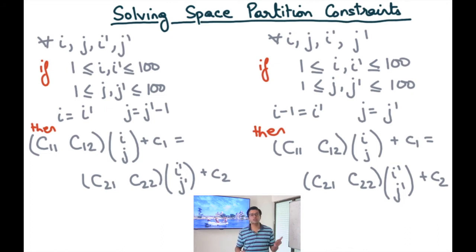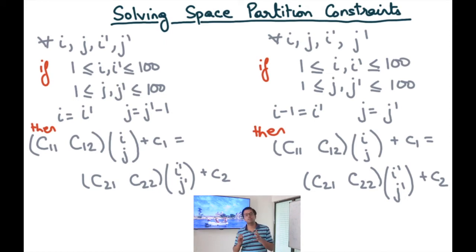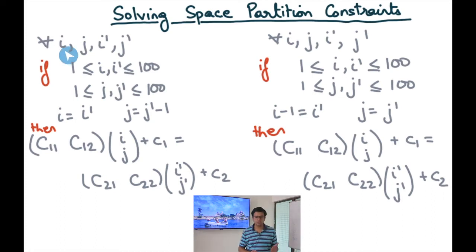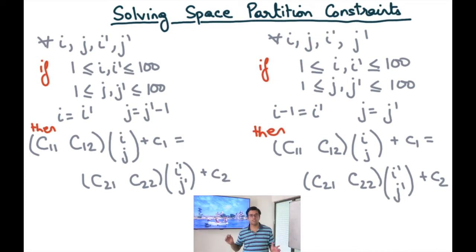Now we are going to discuss a method to actually solve these mathematical formulations, these space partitioning constraints expressed in mathematics. In the previous module we had just come up with possible solutions and checked whether any of those solutions fit our required constraints. But now we are going to try and come up with an algorithm that gives us the solution. So given a set of constraints, how do we arrive at a solution? I'm going to show you the corresponding space partitioning constraints that we formulated, which were because of two pairs of statements: xij and xij-1, and yi-1j and yij.